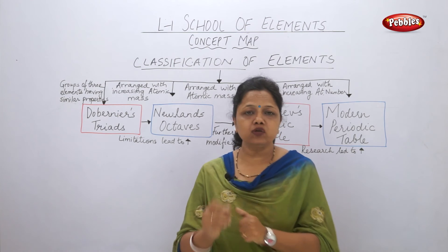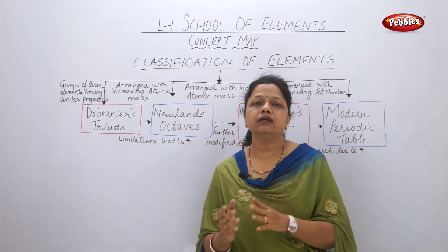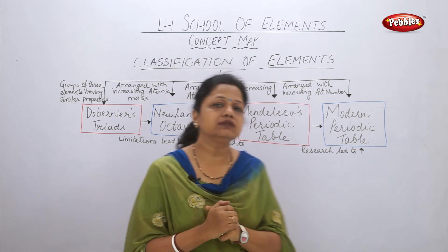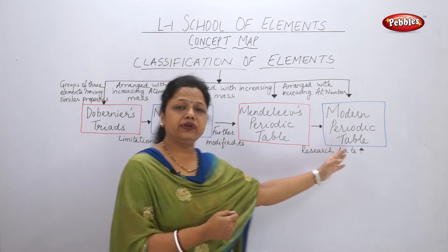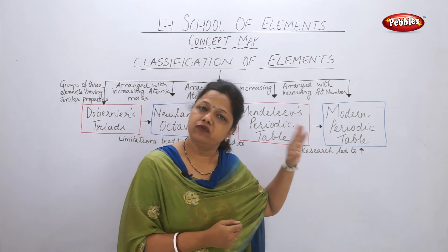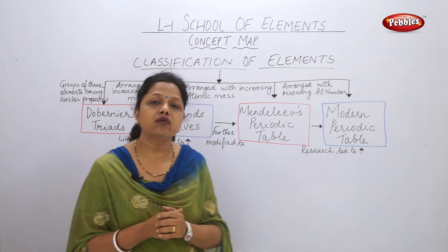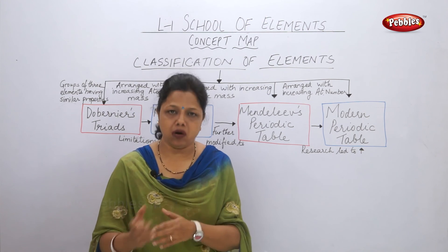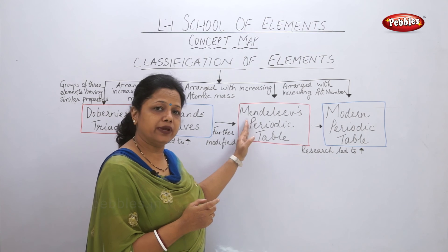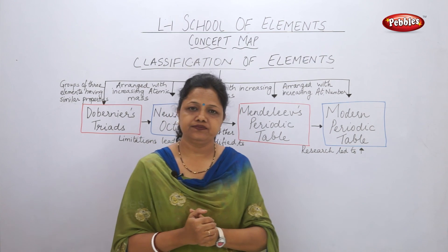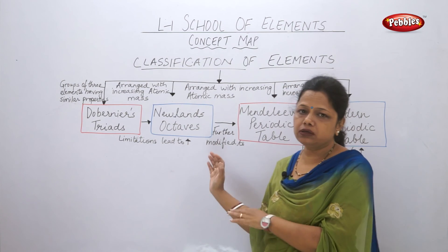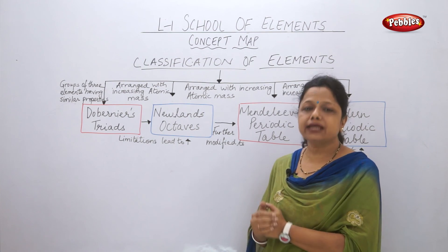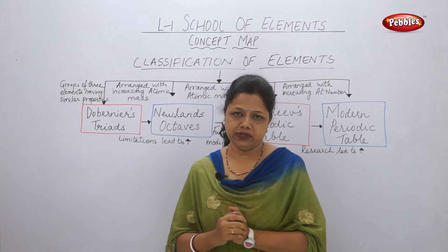This concept map explains why elements needed to be classified and how new discoveries and research led to the modern periodic table, which was accepted worldwide. This table is based on the modern periodic law, while Mendeleev's periodic table was based on Mendeleev's periodic law. This concludes the review of the whole lesson about the four major scientists who tried to classify the elements.